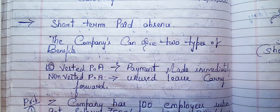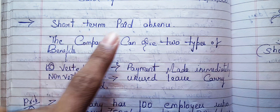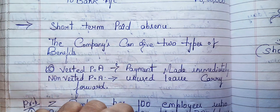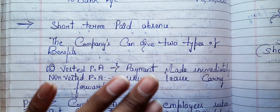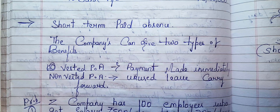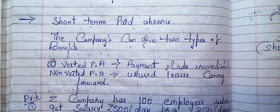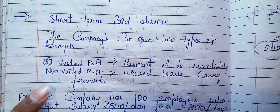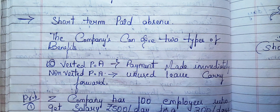In that, we have two types: short-term benefits and long-term benefits. In short-term benefits, we will be solving problems. First, I'm trying to explain about paid absence. The company gives two types of benefits in terms of paid absence to employees. First one is vested paid absence, and second one is non-vested paid absence.